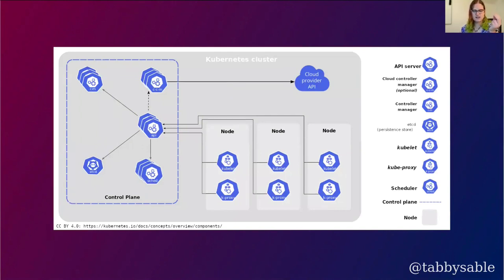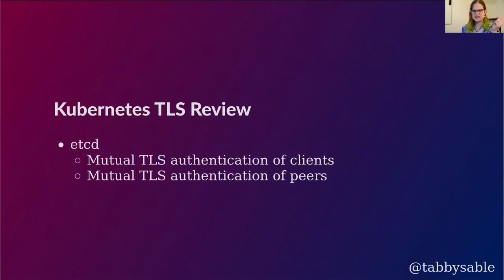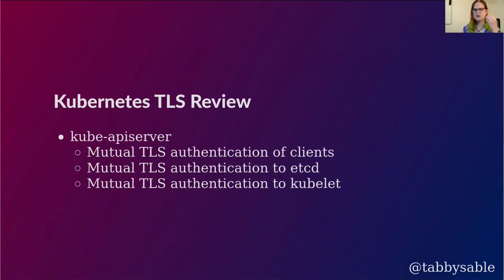Here is your basic Kubernetes architecture diagram, with etcd holding all of the state, the API server in the center of the world, and everything else talking to the API server. Within etcd, mutual TLS is used both to authenticate client connections into the etcd cluster and for peer connections between nodes. The API server makes the most complex use of TLS within the Kubernetes control plane — it performs mutual TLS authentication of clients that connect to it, but it is itself also a mutual TLS client when it connects to etcd, the kubelet, and various other control plane components.